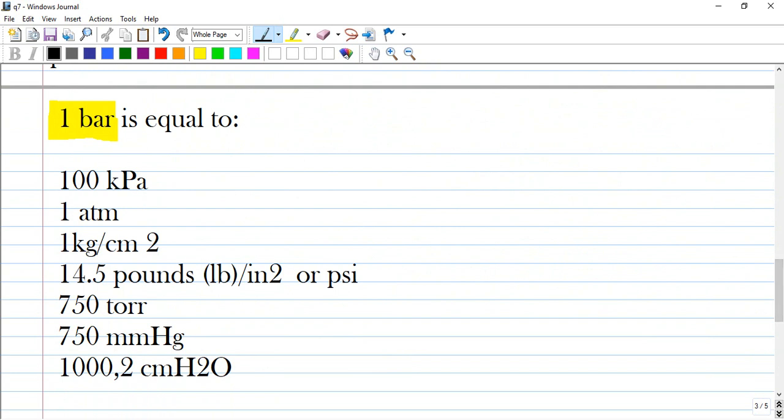Another slide you can also make notes on. In the EDIC MCQs, there are many mistakes with these numbers. You can memorize them easily. One atmosphere is one bar, which is 100 kilopascals, 1 atm, 1 kilogram per centimeter squared, 14.5 pounds per square inch or psi, 750 torr, 750 millimeters of mercury - not 766, remember 750 - and 1000.2 centimeters of water.